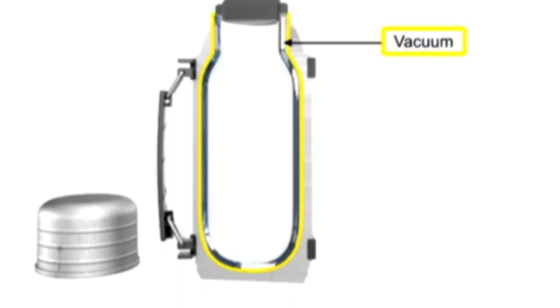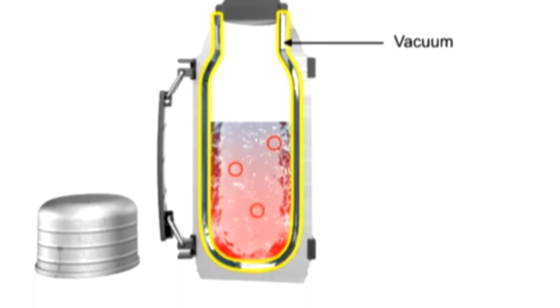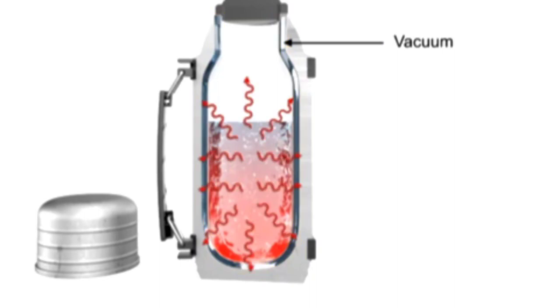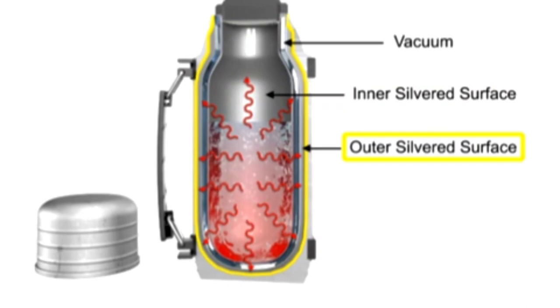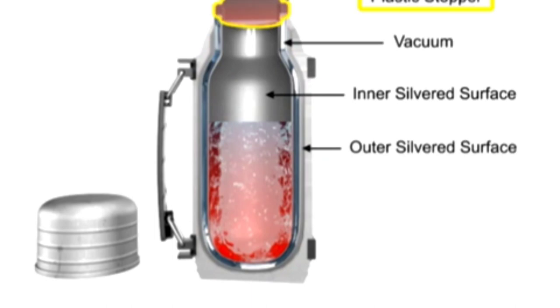In between the silvered glass walls of a thermos lies a vacuum. In the case of a hot liquid, heat transfer by convection through the vacuum is greatly restricted due to the absence of air molecules necessary to facilitate the transfer of heat. The lack of physical contact between the inside and outside walls of the thermos due to this airless space also greatly inhibits the movement of heat by conduction. Heat loss by radiation is prevented by the silvered walls reflecting radiant energy back into the thermos. Some conduction of heat through the stopper and glass can be expected, but this too is limited because they are made of materials with very low conductivity.